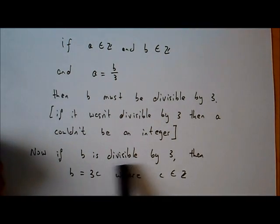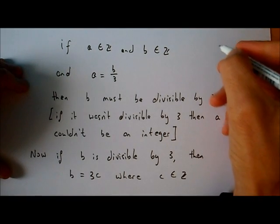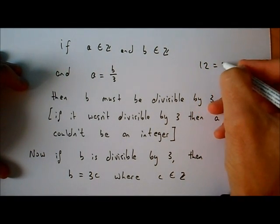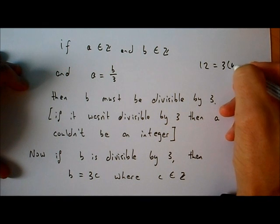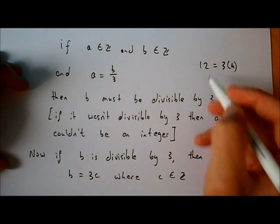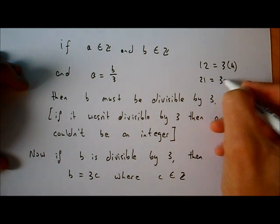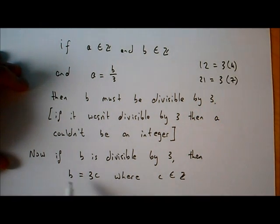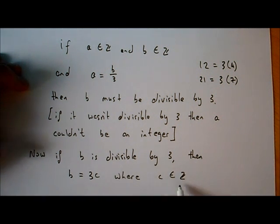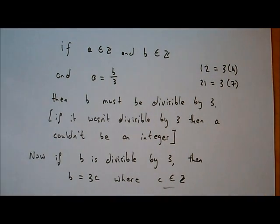Now, if B is divisible by 3, you can write it as 3 times something. For example, 12 is divisible by 3 and 12 equals 3 times 4. Similarly, 21 is divisible by 3 and 21 equals 3 times 7. So if B is divisible by 3, then B must equal 3 times C, where C is some integer. We're going to use this idea in our proof that the square root of 3 is irrational.